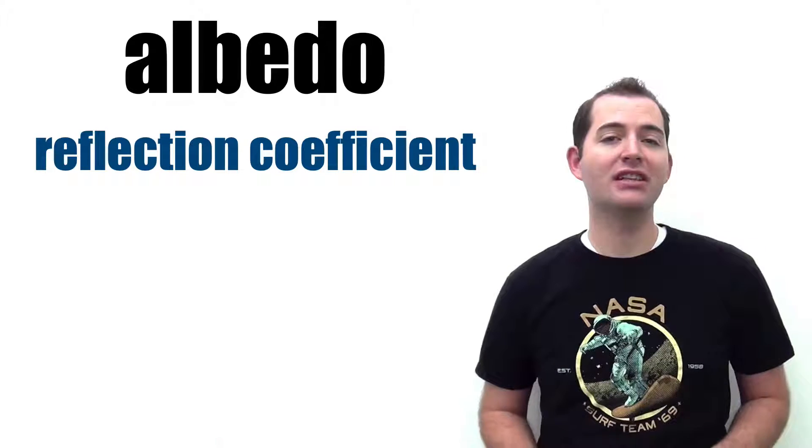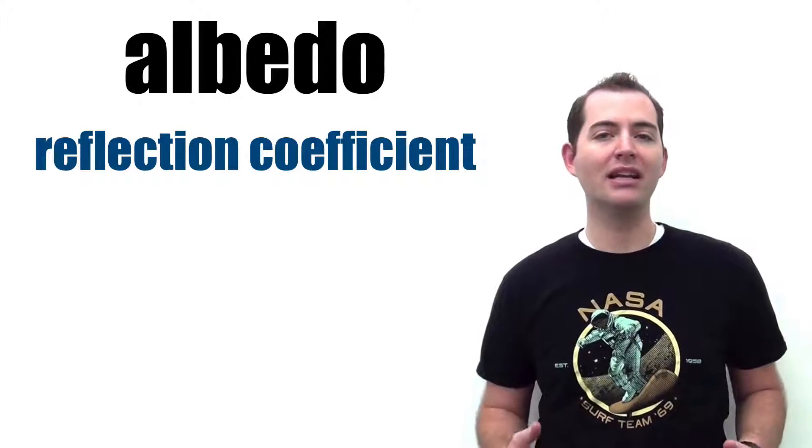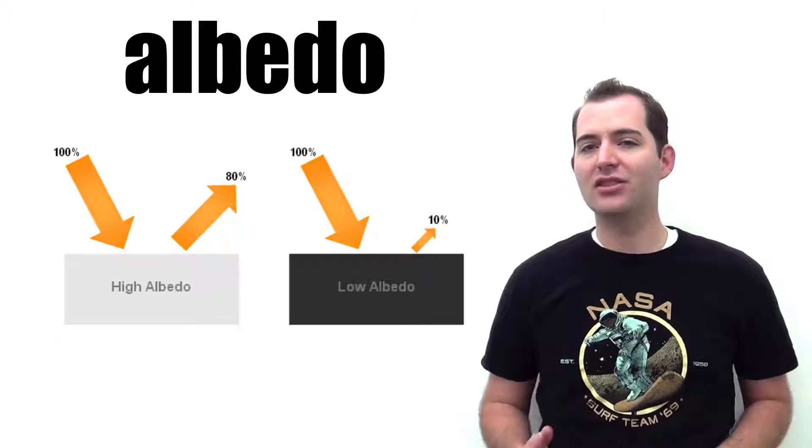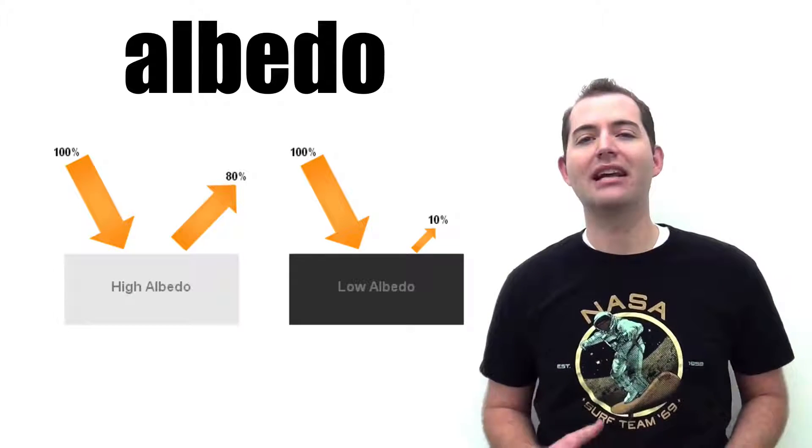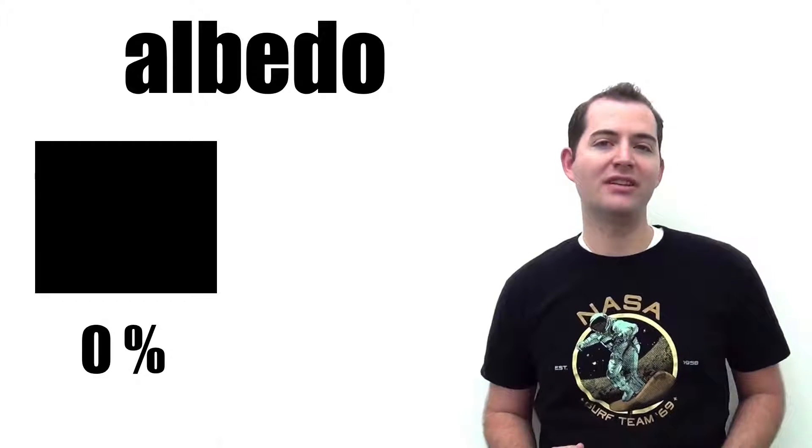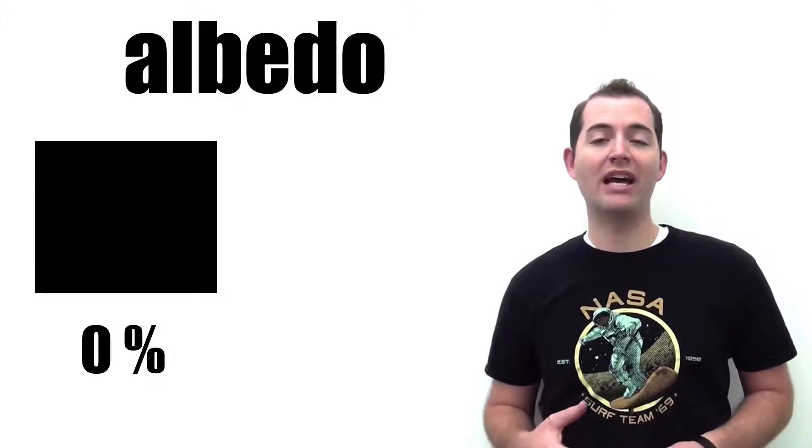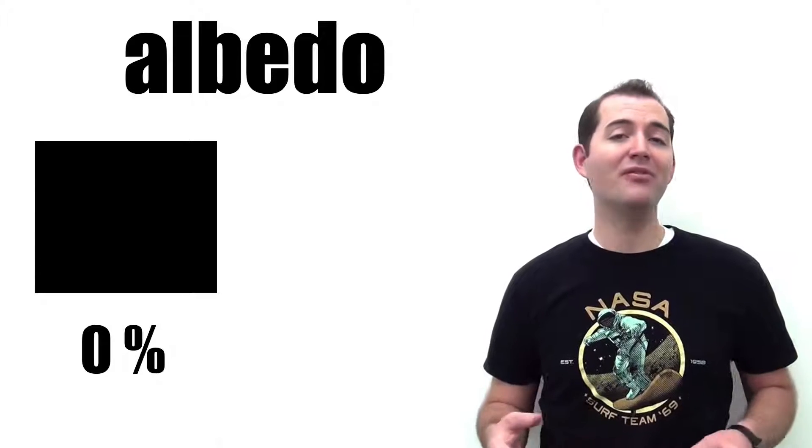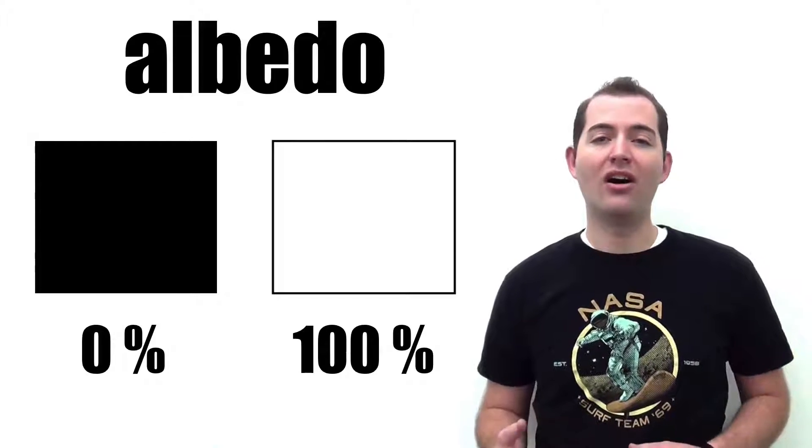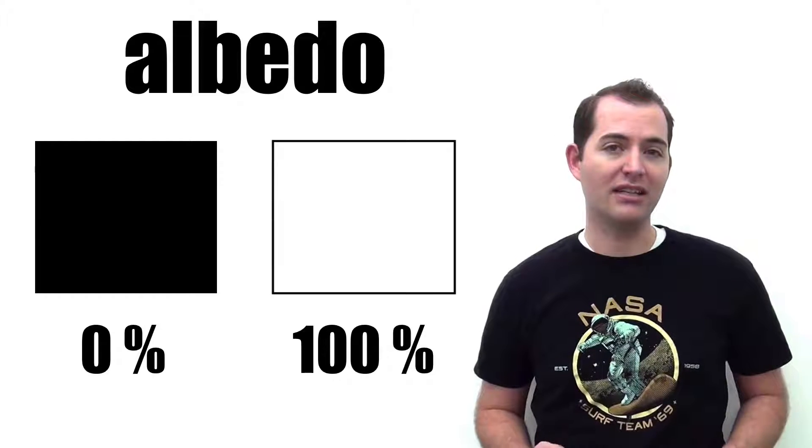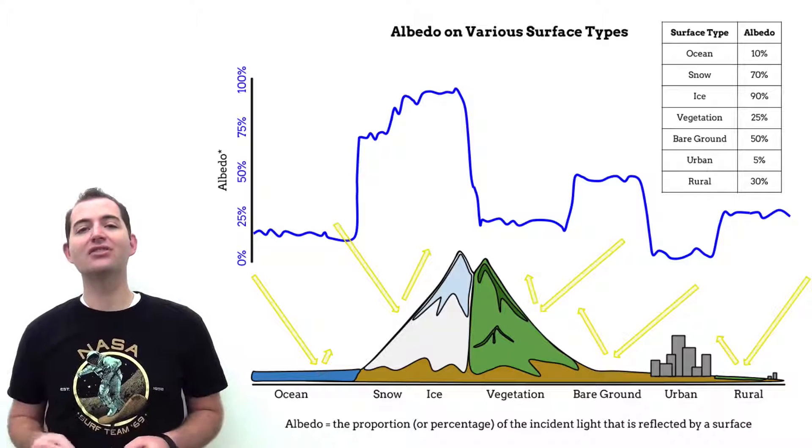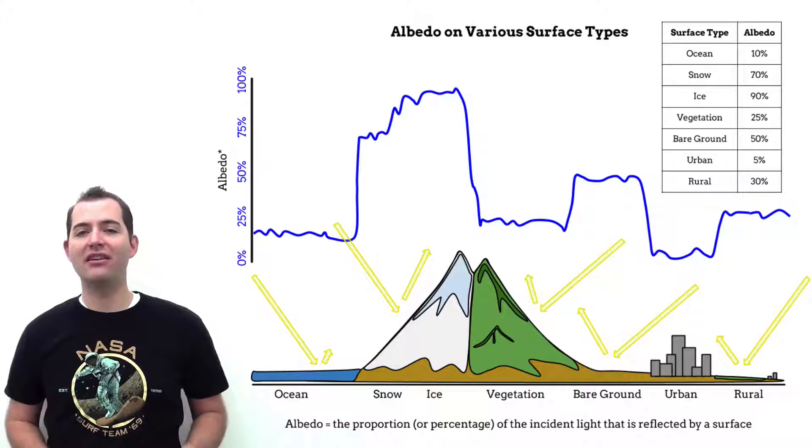Albedo is also known as the reflection coefficient and it comes from a Latin word meaning whiteness. Different surfaces have different albedo values and these are typically shown as a percentage. For example, a perfectly black surface where all light is absorbed would have an albedo of 0%, and a perfectly white surface where all light is reflected would have an albedo of 100%. Different surfaces have different albedo values.